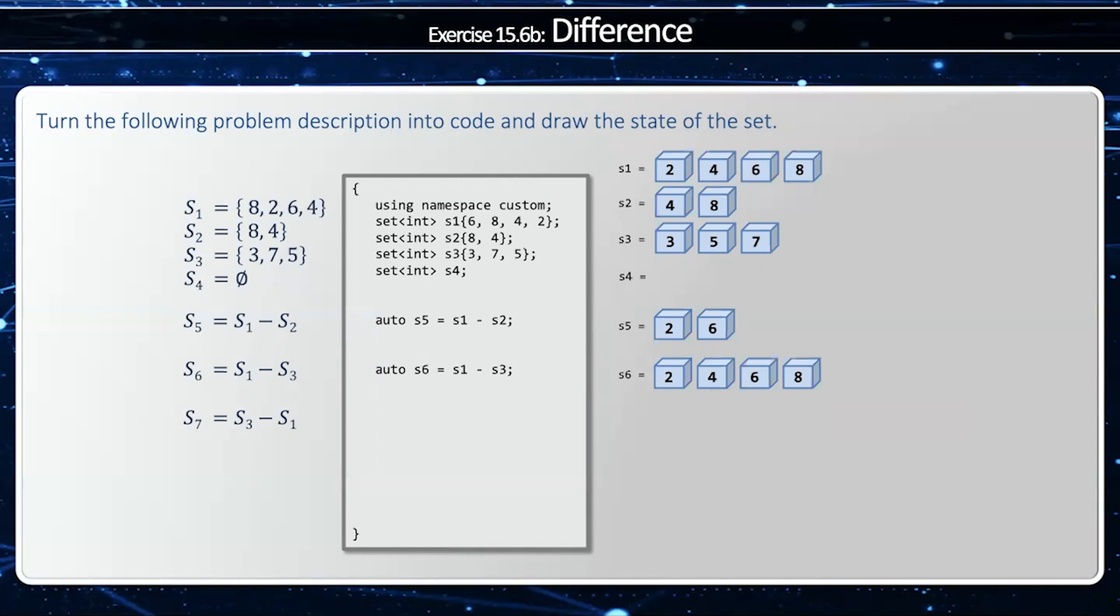Now, if I reverse that, S3 minus S1, I'm going to start with 3, 5, 7. I'm going to subtract 2, 4, 6, 8, and that'll give me my original 3, 5, and 7.